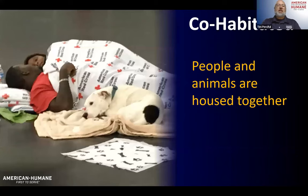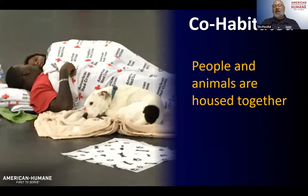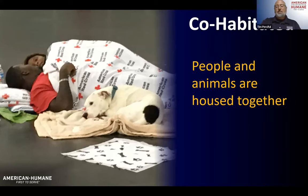The next type is a co-habitated shelter. Co-habitated shelters are rising in popularity — this is where people and animals are housed together. People are sleeping right next to their animals, usually with the person on a cot and the dog inside a crate. This is becoming much more common and popular when it comes to sheltering.